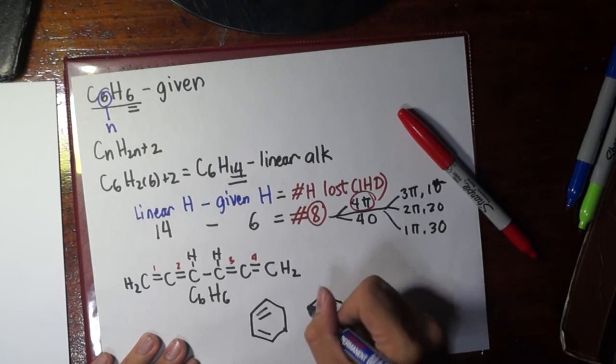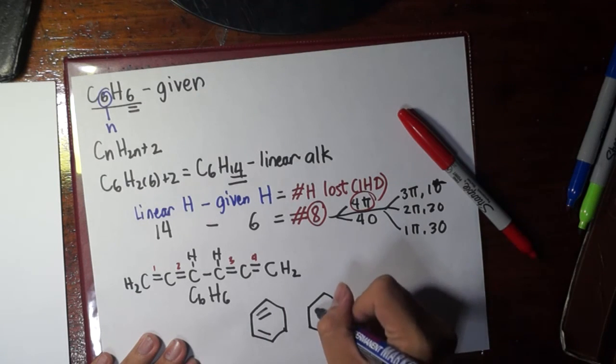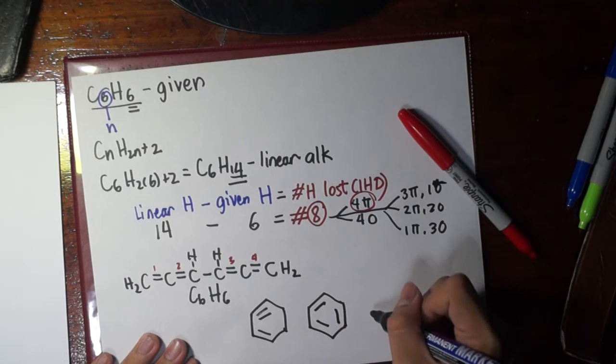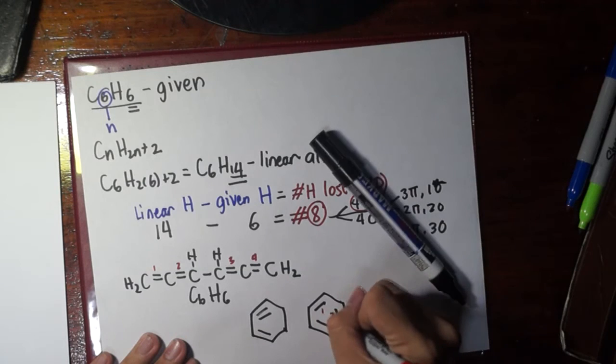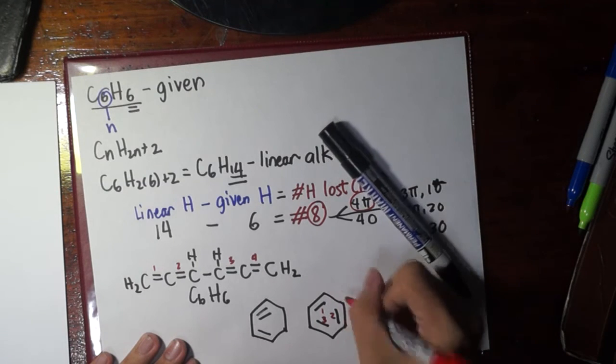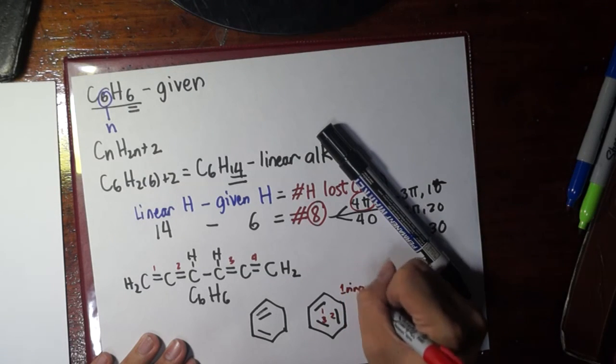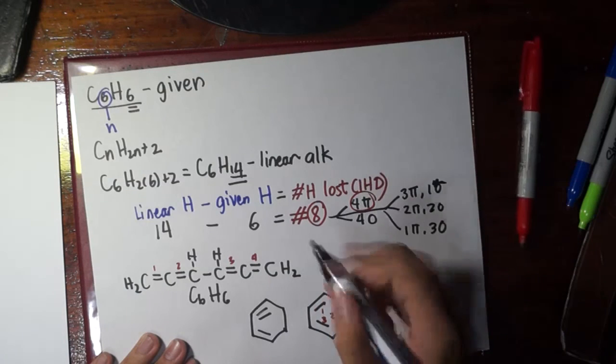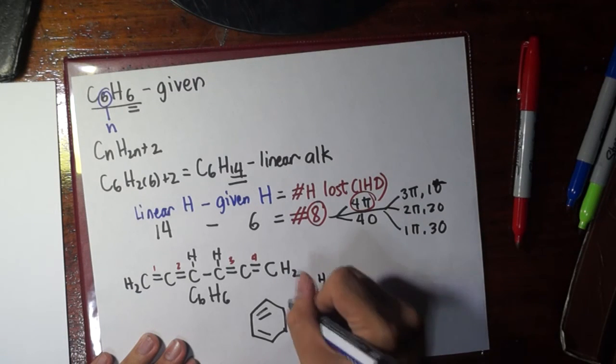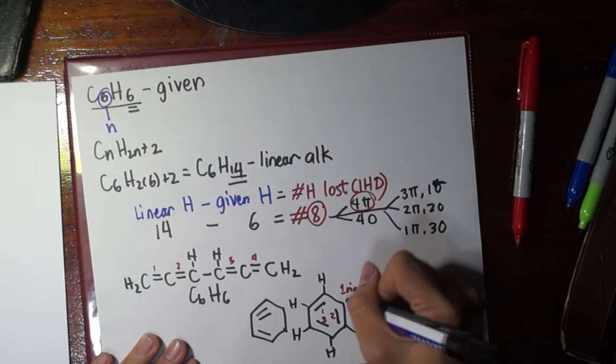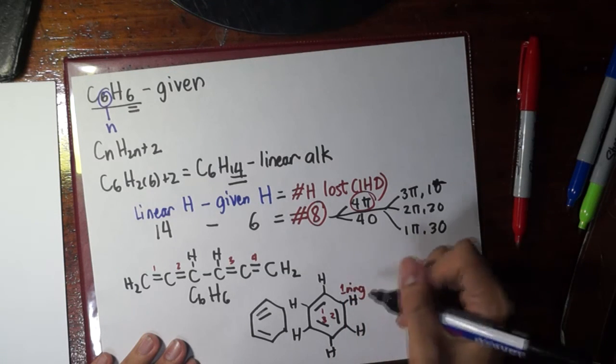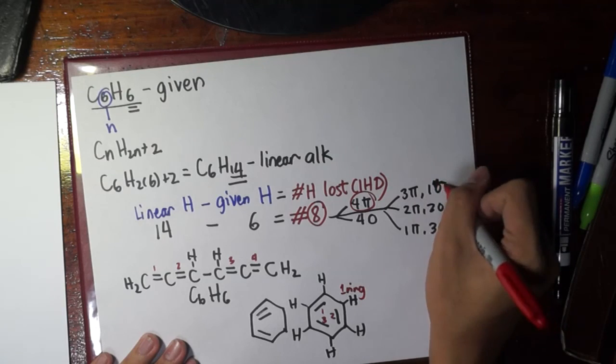But, actually, the most common C6H6 that we know, which is cyclic, is this one. And, we know that this is benzene. So, here we have 3 pi bonds and 1 ring. We should be able to come up with C6H6. So, how many hydrogens are there? 1, 2, 3, 4, 5, 6. So, this is another possible structure.